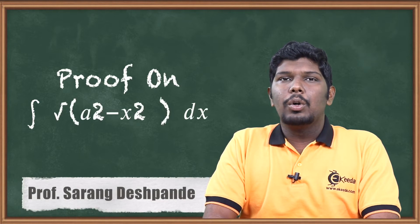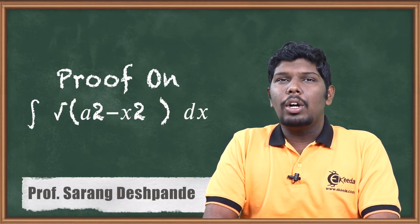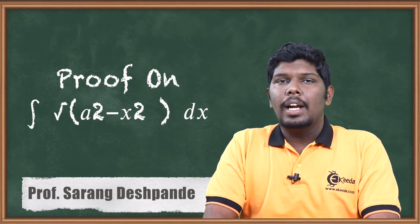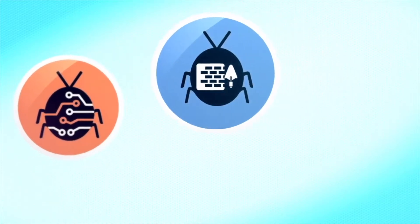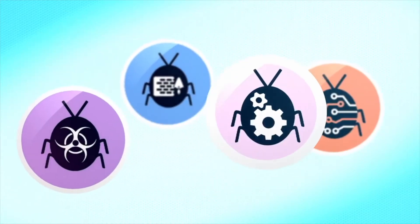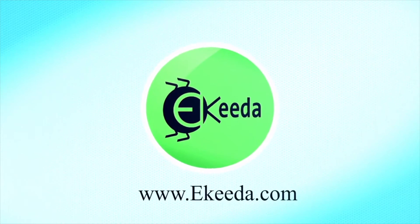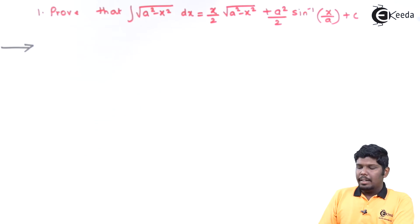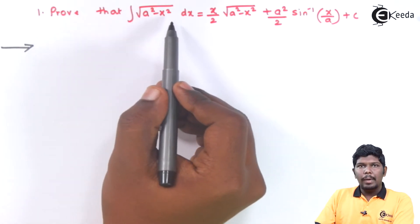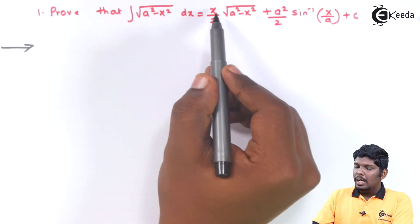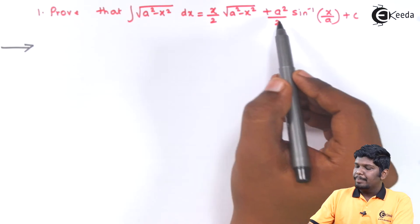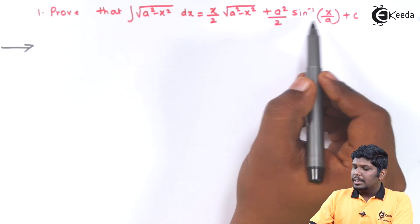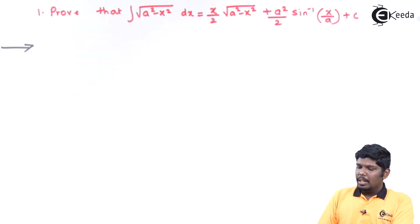Hello friends. In this video, we are going to see an important result which is proved based on the integral UV theorem. Let us start with the first proof. We will prove that the integral of √(a² - x²) dx is equal to (x/2)√(a² - x²) + (a²/2) sin⁻¹(x/a) + c.